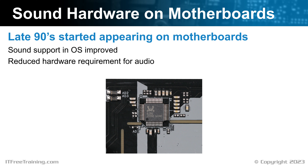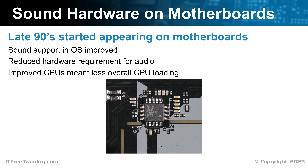This may seem like it will be a problem since we are putting more load on the CPU that could be done by the hardware on a sound card. But due to improvements in CPUs, this translated into less load on the CPU. Put simply, even if you have a complex sound being played, including surround sound, on modern CPUs this does not create much load. You can see why, even though integrated sound on the motherboard does not have the same hardware support as a sound card, on modern operating systems it does not need to. This accounts for the decline in the use of sound cards over integrated sound chips.